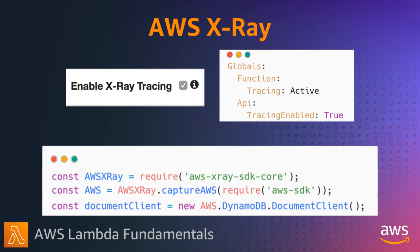Your functions send trace data to X-Ray, and X-Ray uses that data to generate a service map automatically, along with trace summaries that you can search. You can instrument calls via the AWS SDK by wrapping the object with the X-Ray SDK, and can instrument your code to add further information to your X-Ray traces to record other outgoing calls.